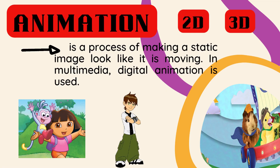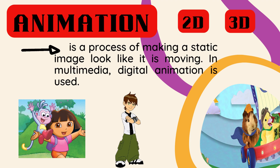Animation is a process of making a static image look like it is moving. In multimedia, digital animation is used. When you make those pictures or drawings move, that is animation. There are two categories: 2D (two-dimension, which has width and length) and 3D (three-dimension, which has height, width, and length).